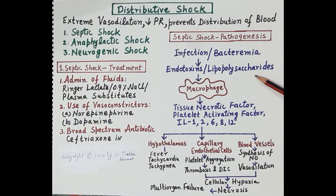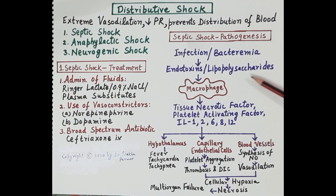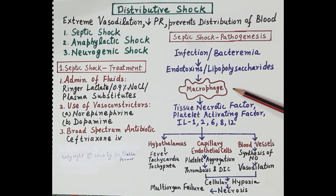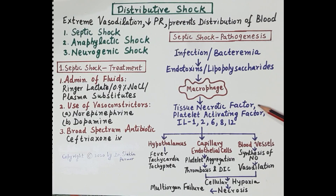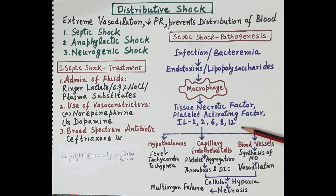The toxins or lipopolysaccharides released by bacteria into the blood bind to macrophages — which are actually monocytes that have penetrated the tissues. These lipopolysaccharides activate the macrophages, and activation of macrophages results in the release of inflammatory mediators like tumor necrosis factor, platelet activating factor, interleukins 1, 2, 6, 8, 12, and nitric oxide.